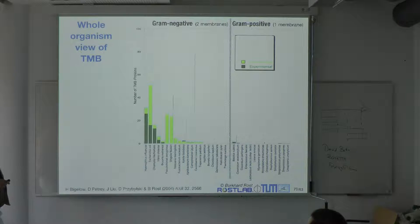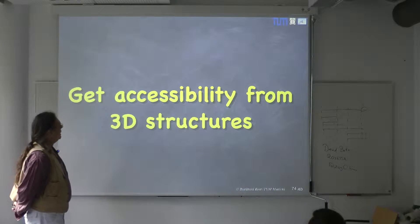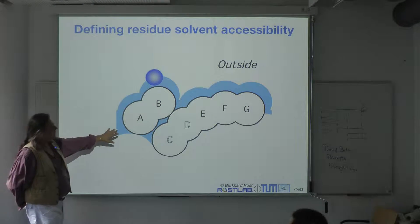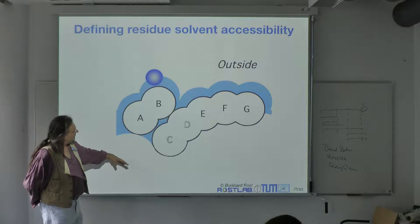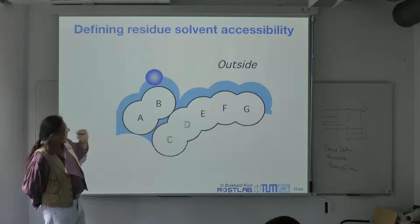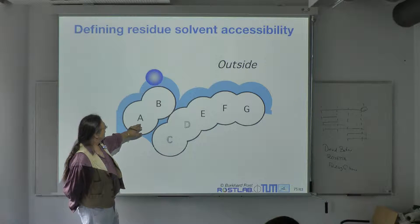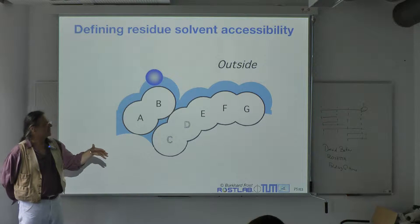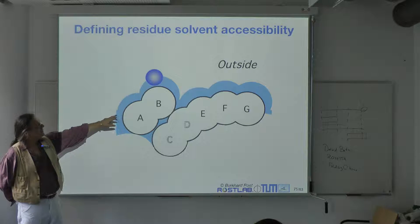What I want to get into is solvent accessibility. The way we get solvent accessibility from 3D structure — this is supposed to be a protein here, the coloring is a little bit off. Residues A to G are the residues in a protein, seven residues total.